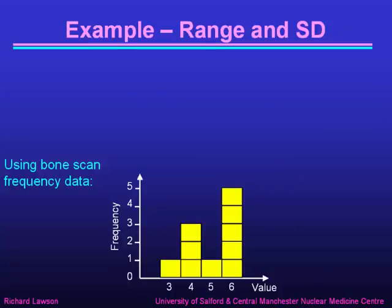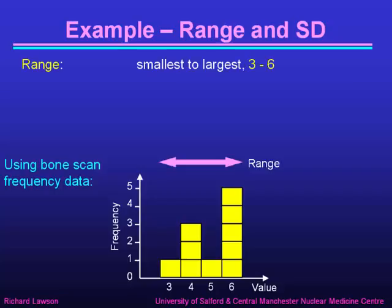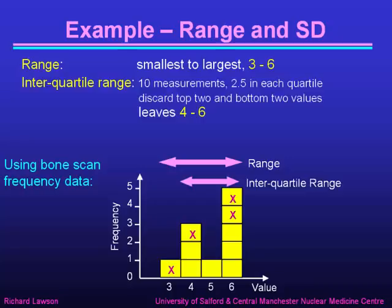Let's look at that using the bone scan frequency data. The range, from the smallest to the largest, is very obvious — it's from three, the smallest measurement, to six, the largest. The interquartile range is a bit more problematical. There were ten measurements, so each quartile contains two and a half measurements. Since we can't have half a measurement, if we discard the top and bottom quartiles, we discard the first two and the last two measurements — getting rid of the three and the four, and two of the sixes — leaving an interquartile range that goes from four to six.